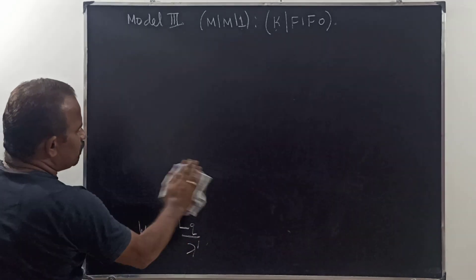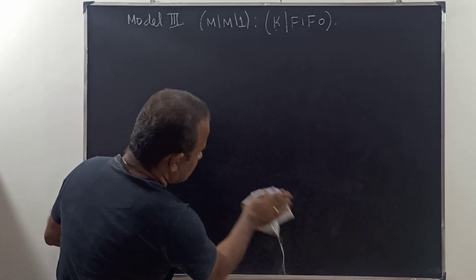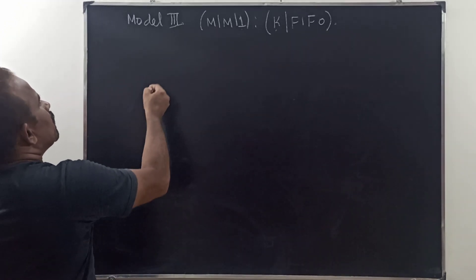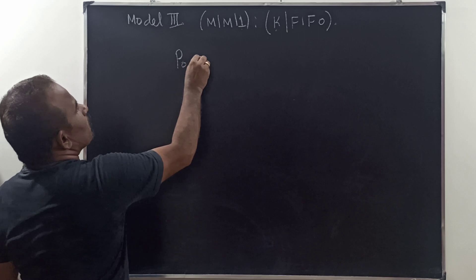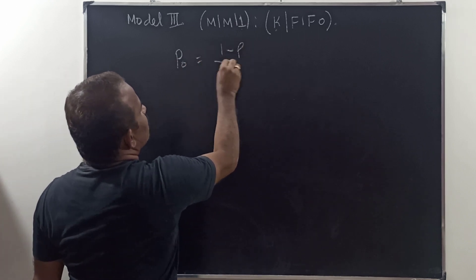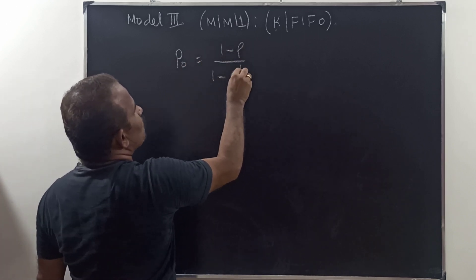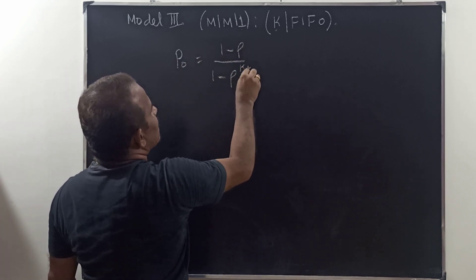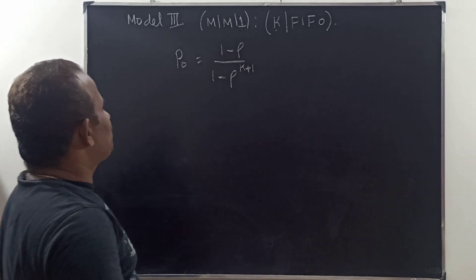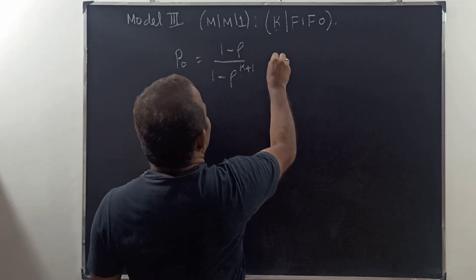P0 is equal to (1 minus rho) divided by (1 minus rho power K+1), if lambda is not equal to mu. And P0 is equal to 1/(K+1), if lambda is equal to mu.